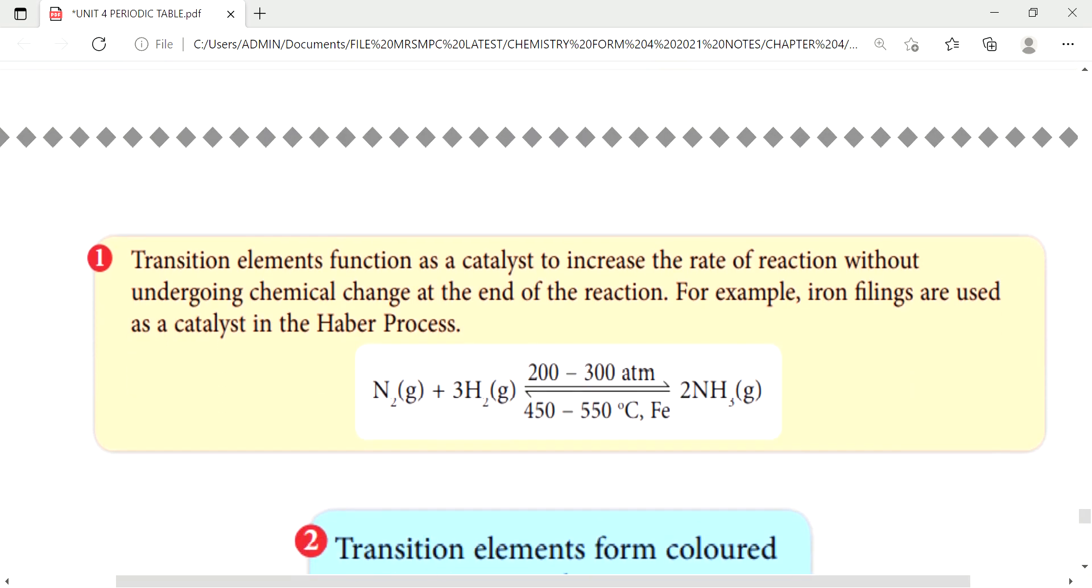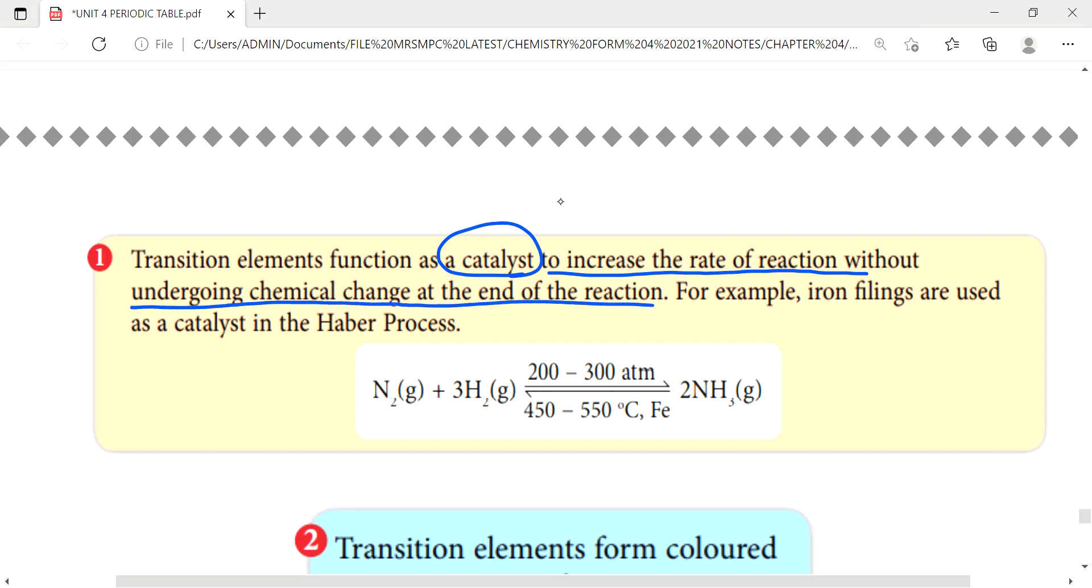Transitions element function as a catalyst. So catalyst has functions to increase rate of reactions without undergoing chemical change at the end of reactions. In simple terms, it speeds up reactions without undergoing chemical change. This means we add catalyst but it does not change the product that will be formed. It only speeds up the process.